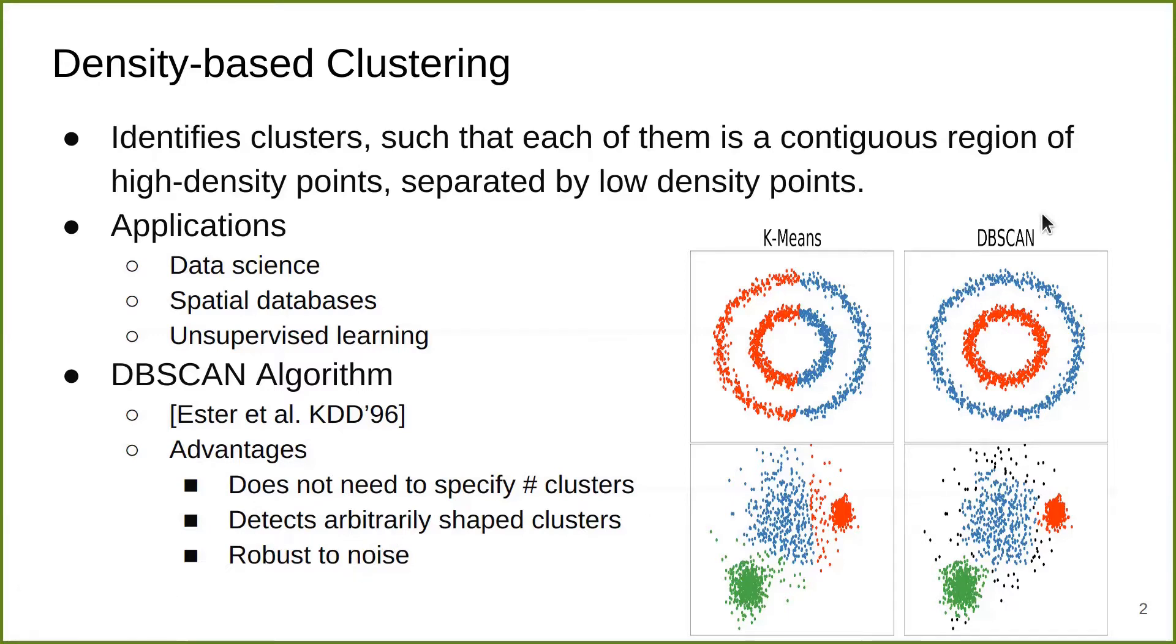On the right, we compare DBSCAN with a naive version of k-means on two different datasets. We see that DBSCAN correctly identifies two clusters that are nonlinearly separable, whereas k-means fails. For the second dataset, DBSCAN identifies the core part of these clusters while rejecting some data points as noise, but k-means gives a somewhat less optimal cluster.